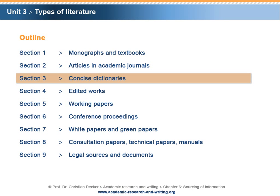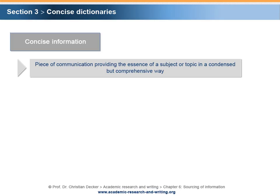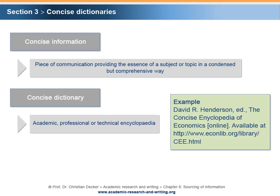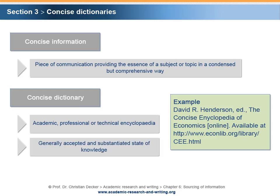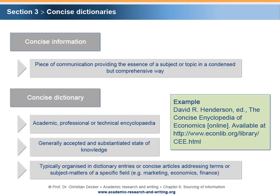Section 3: Concise Dictionaries. Concise information is a piece of communication providing the essence of a subject or topic in a condensed but comprehensive way. A concise dictionary is an academic, professional or technical encyclopedia that encompasses the generally accepted and substantiated state of knowledge of a discipline. Typically, it is organized in dictionary entries or concise articles addressing terms or subject matters of a specific field, for example marketing, economics, finance, etc.